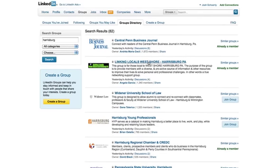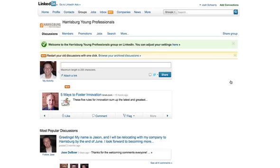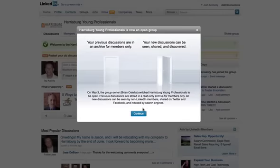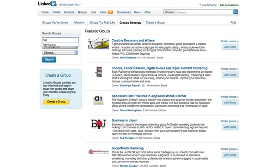So here's what we're going to do. We're going to go right here to the groups and we're going to go to groups directory. And we are going to search for local groups. So for me, I'm just going to type in Harrisburg because Harrisburg is the biggest city in my area and I've gotten 82 search results.